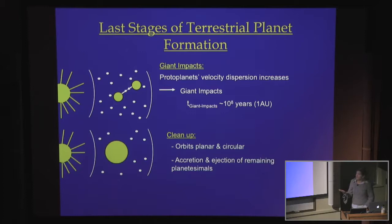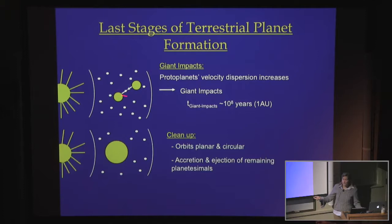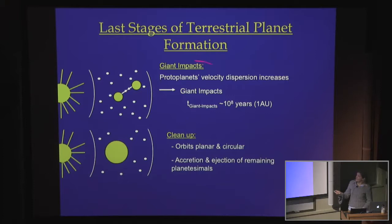Once several isolation bodies have formed and consumed at least half of the material into protoplanets, eventually, as these planetesimals are depleted, they can no longer collectively provide damping to the velocity dispersions of those protoplanets. So these bodies start to excite each other's eccentricities and inclinations. The orbits start to cross and you can have giant impacts. Our Moon-forming impact is like the last giant impact that we think our Earth has gone through. So the picture for terrestrial planet formation is quite different from that for Uranus and Neptune.